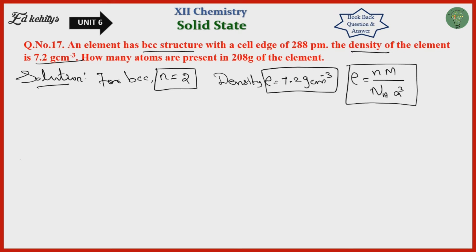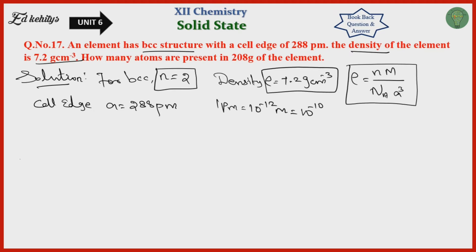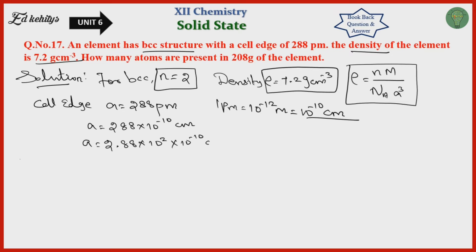Next, the cell edge. Cell edge a equals 288 pm. Converting: 288 pm equals 2.88 times 10 to the power minus 8 centimeter.